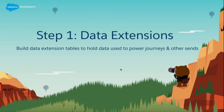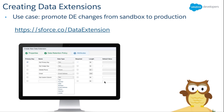Step one: we know the data we need, but we need to set up that plumbing in the marketing cloud — that's what we call data extensions, tables that hold data and power journeys and other sends. To create data extensions, it's relatively straightforward — go to developer.salesforce.com to find the APIs. If you're going the clicks route, you just create a new data extension — it's simply a table where you pick different column types like text, number, date, whether it's required, the length, default values, and data retention policy. Everything accessible in the UI is also accessible via the API.